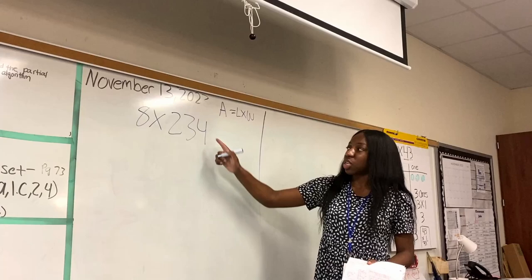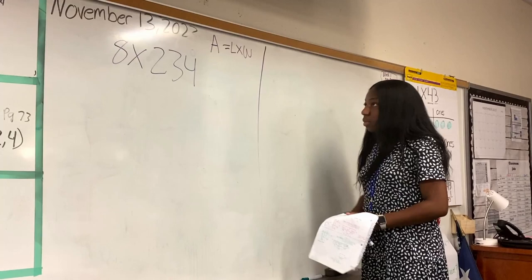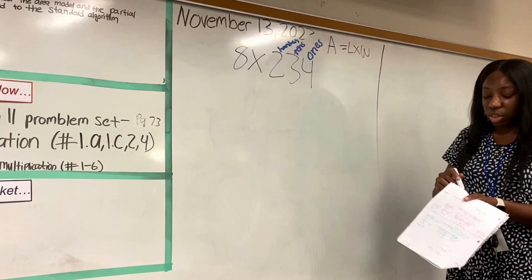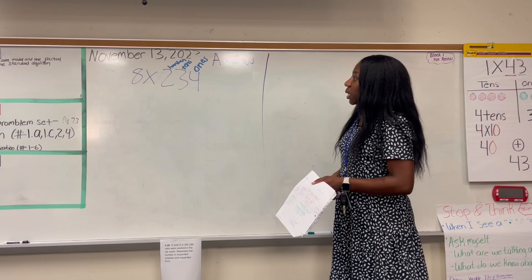So I know this is my ones. I'm going to write it in complete sentences. So ones, my tens, and hundreds. As you write this in your notebook, you should have it fully spelled out and not halfway.